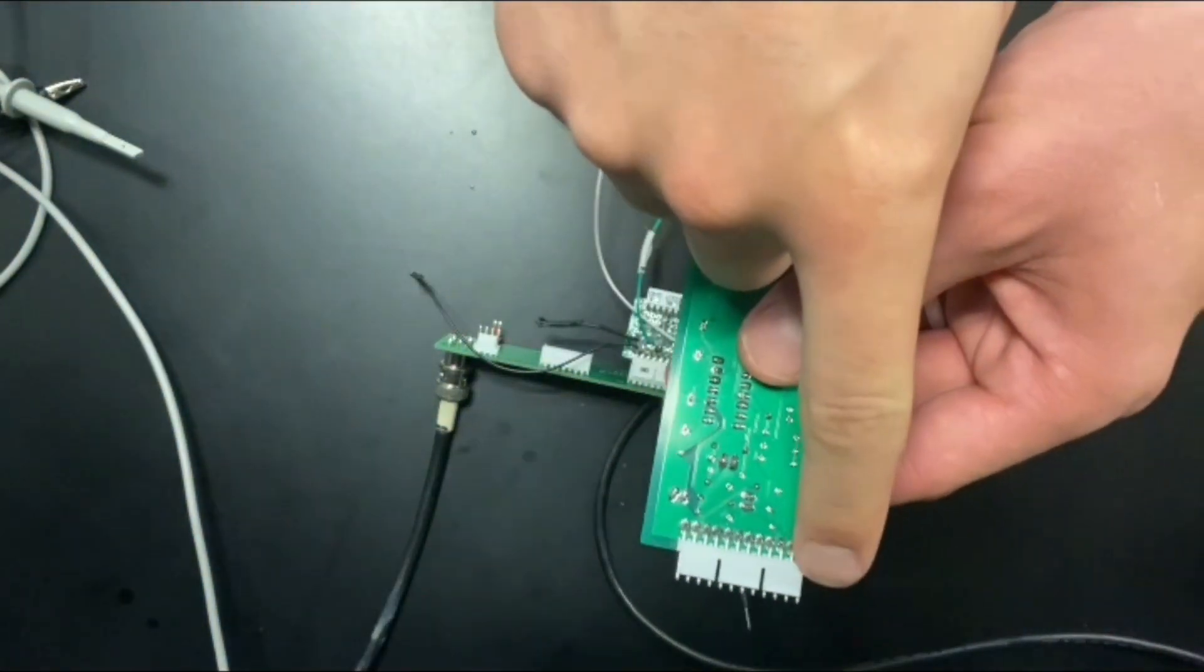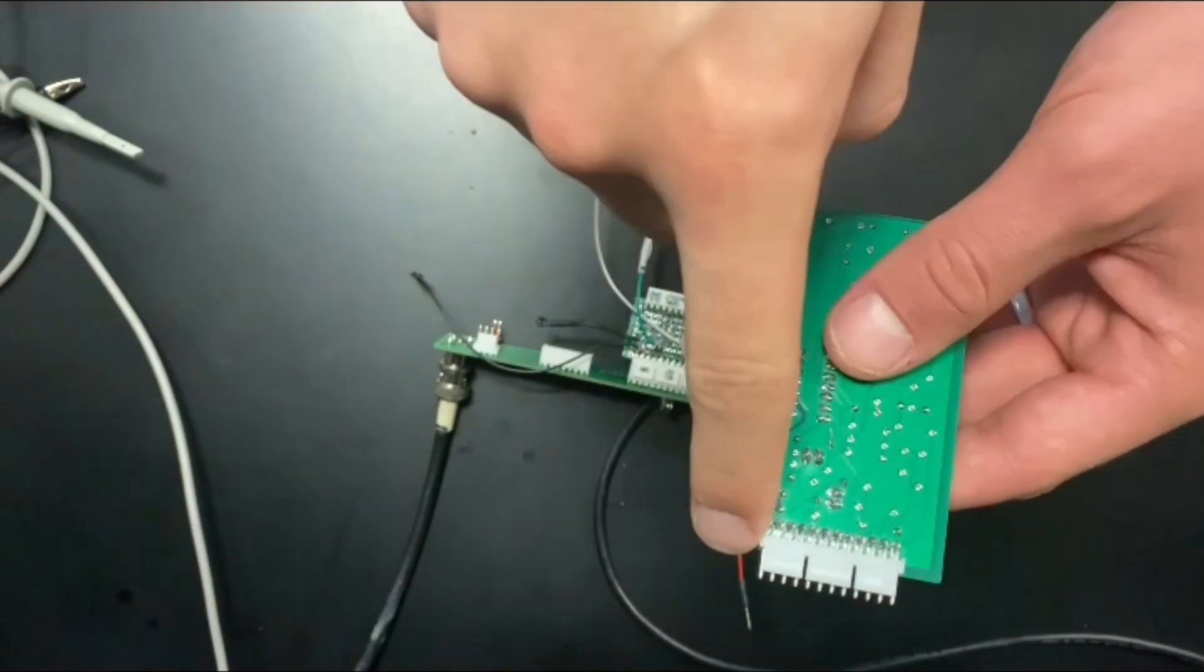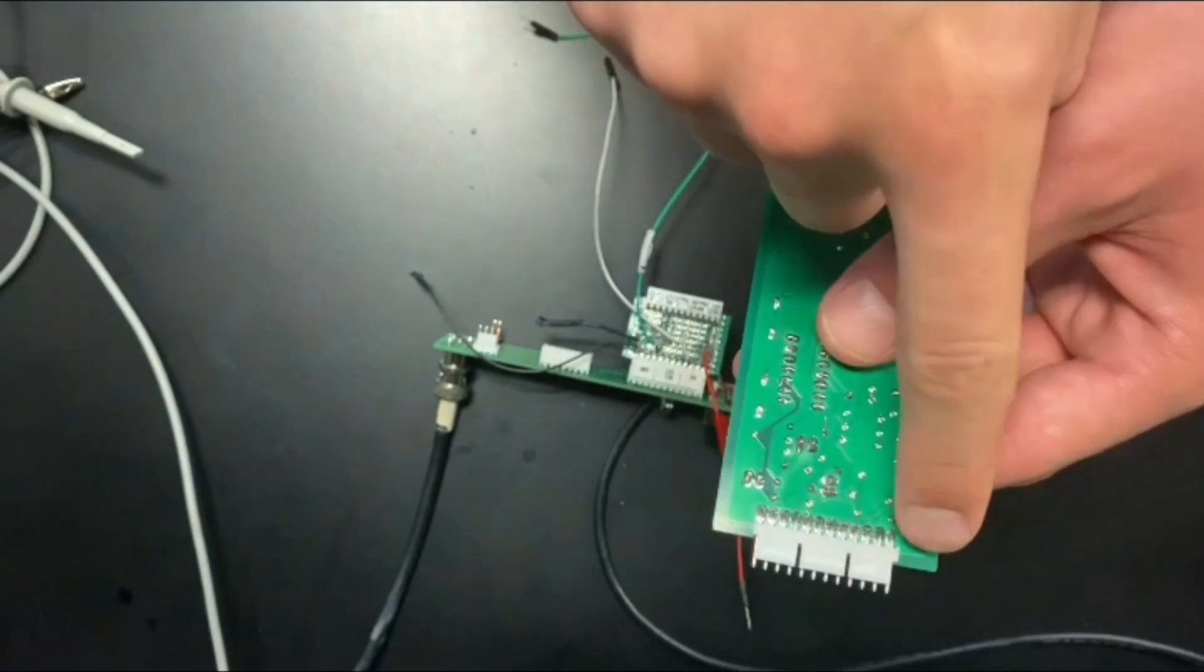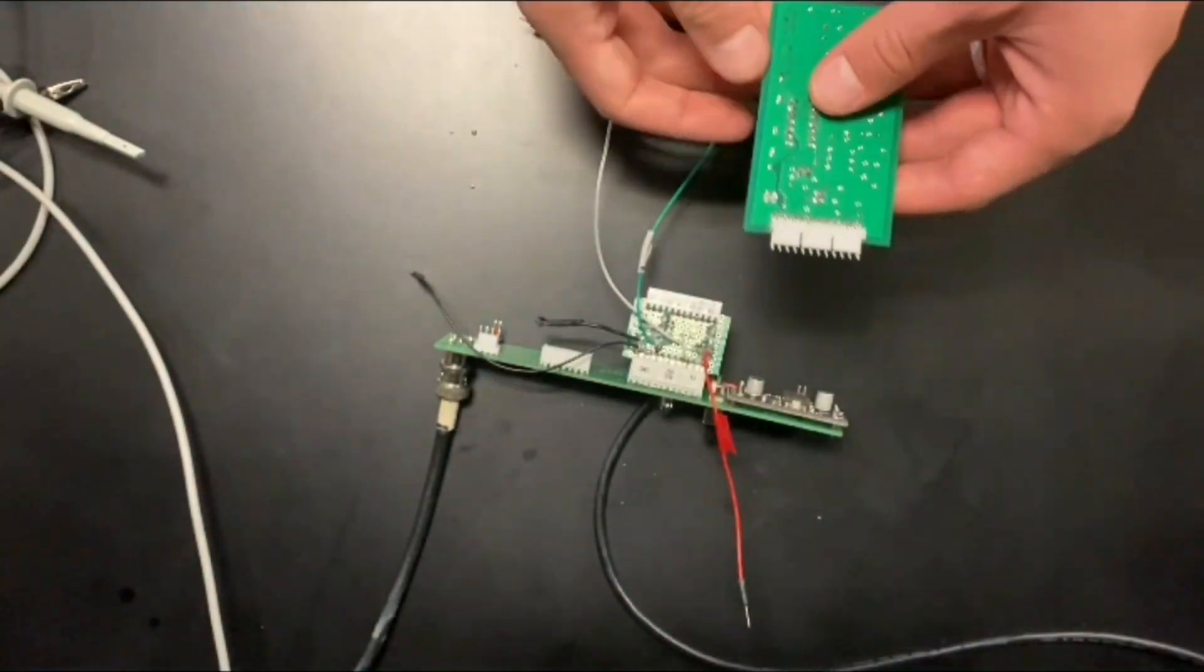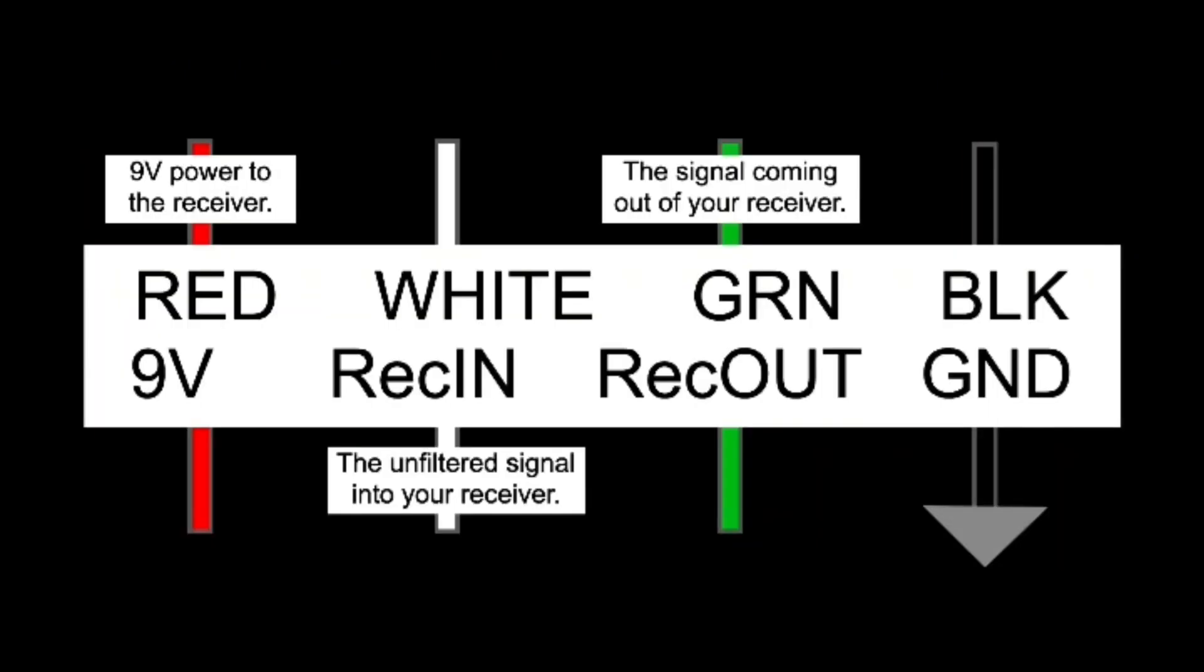When you plug in your receiver card, bear in mind this pin on the left is going to be the nine volts and the ground is on the right - those are your power rails for your whole system. Plug it into the card accordingly. It should be labeled nine volts on the left and ground on the right.